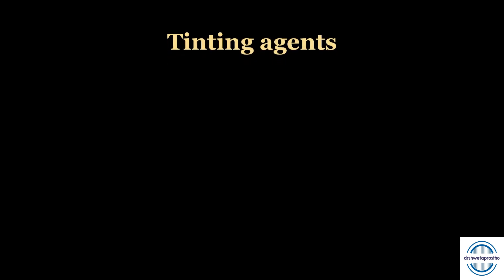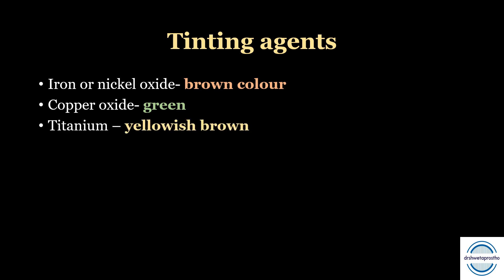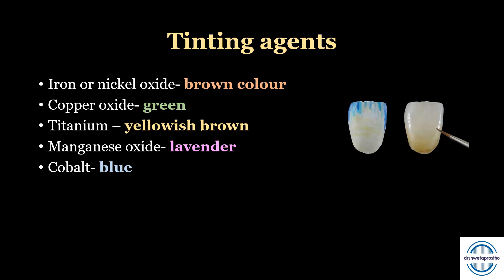Now let us talk about tinting agents that give colored tints. Iron or nickel oxide gives a brown colored stain; copper oxide gives a green tint; titanium gives a yellowish-brown tint; manganese oxide gives a lavender tint; and cobalt gives a blue shade. These help in simulating natural teeth and are often asked in MCQs.